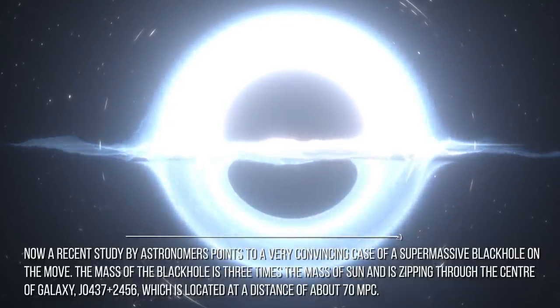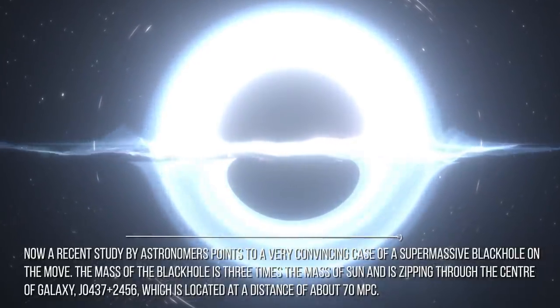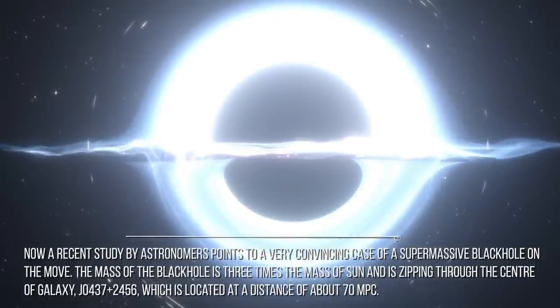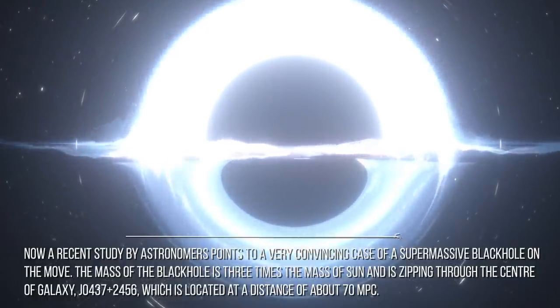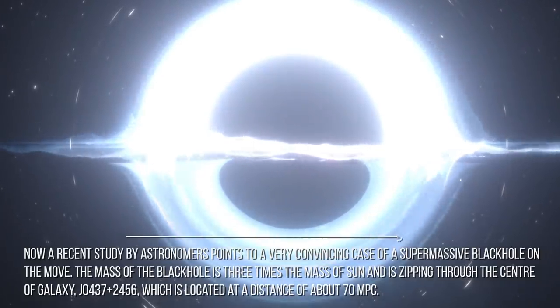The mass of the black hole is three times the mass of the sun and is zipping through the center of galaxy J0437 plus 2456, which is located at a distance of about 70 million parsecs.